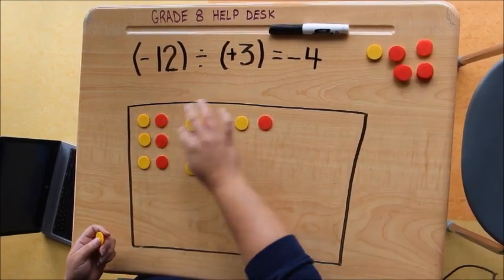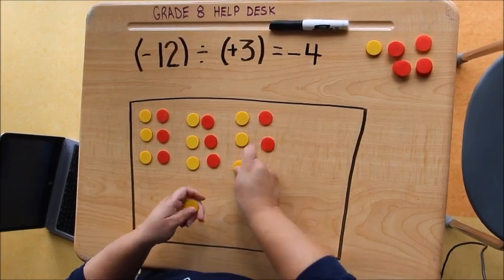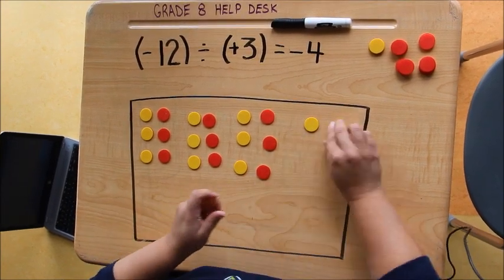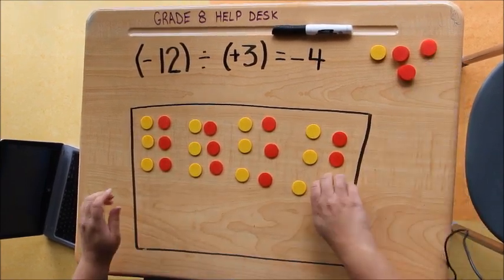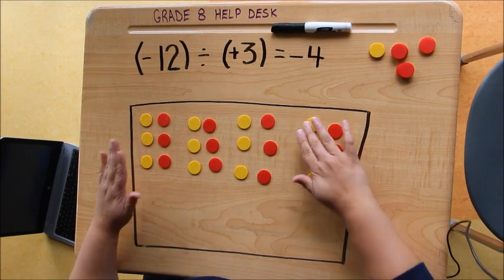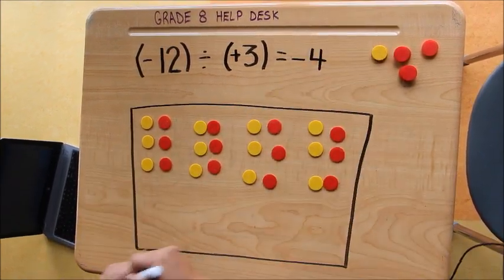So right now I have 1, 2, 3, 4, 5, 6, 7, 8, 9, 10, 11, and 12. So actually what I have in the bank right now is zero. I have nothing because these zero pairs cancel each other out.